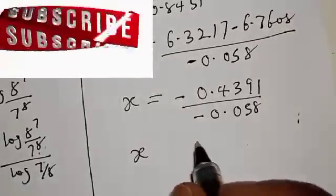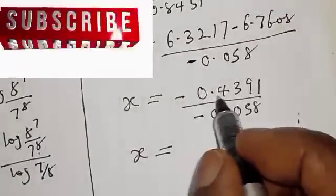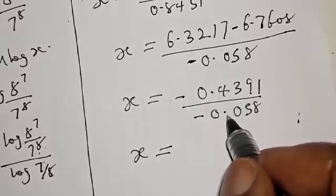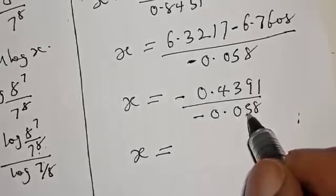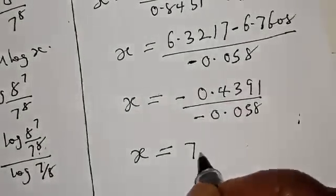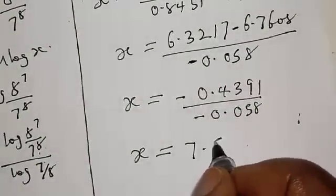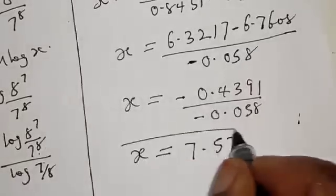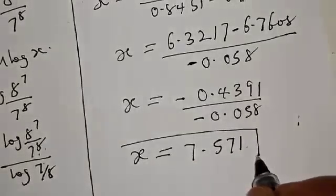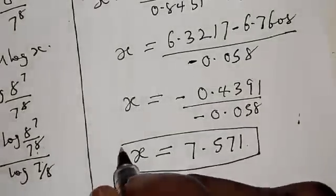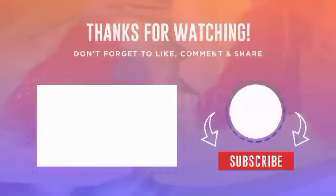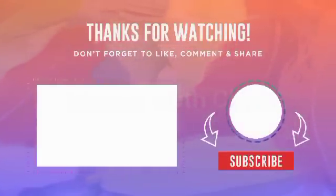Therefore, our final answer is x is equal to minus 0.4391 divided by minus 0.058, which gives us 7.571. That is our final answer. If you have enjoyed the class, please don't forget to like, share, comment, and subscribe. Thank you.